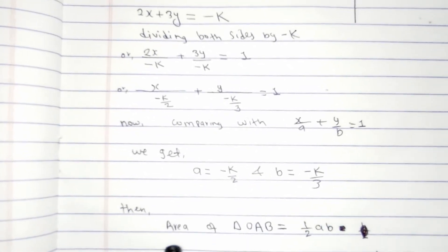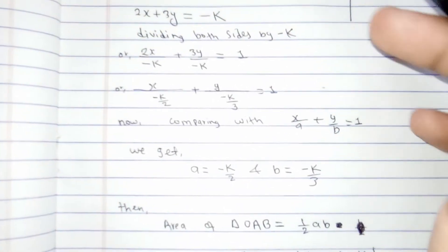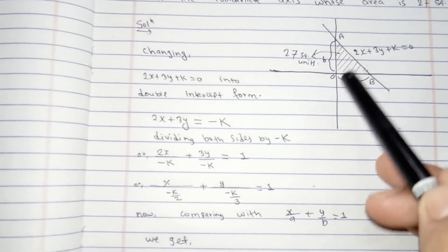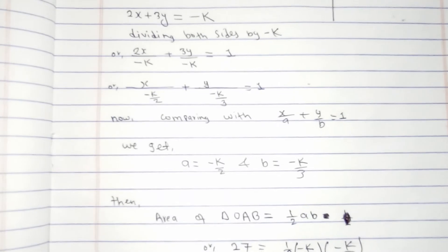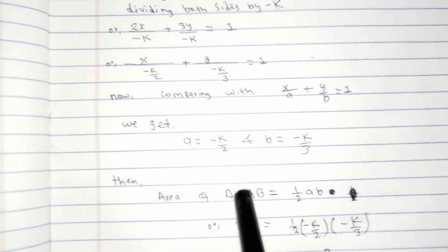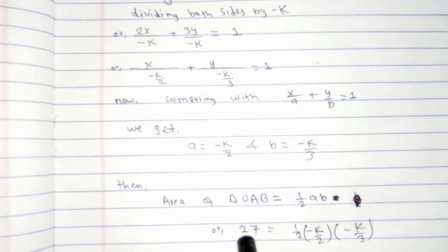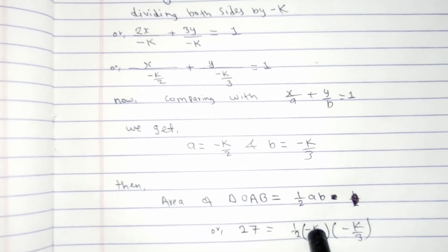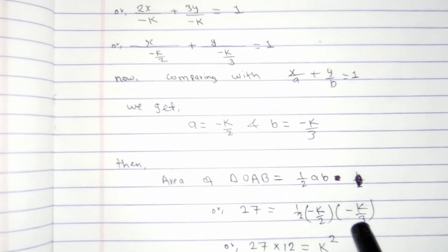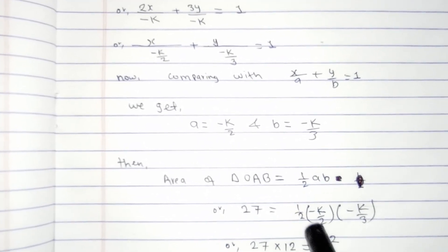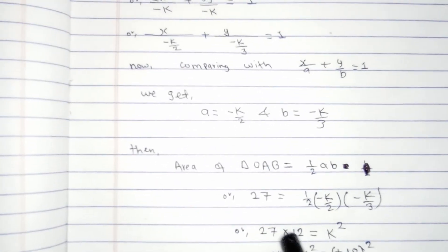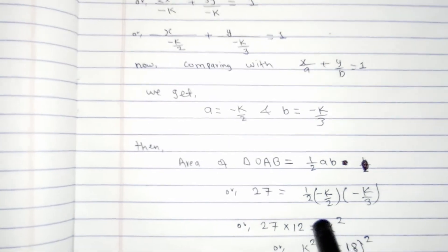Once we have the values of a and b, we apply the triangle area formula. The area of triangle OAB = (1/2) × a × b. The area is also given as 27 square units, so (1/2) × (−k/2) × (−k/3) = 27. Multiplying −k × −k gives k², and 2 × 2 × 3 = 12. Cross-multiplying 27 by 12 gives 324.